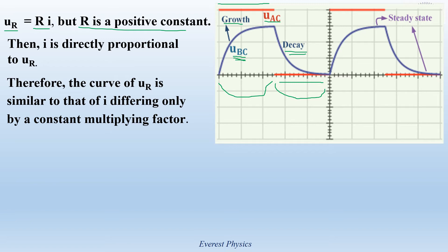At the end of the growth process, the current becomes maximum — we say that steady state is attained. At the end of the decay process, the current becomes zero — this is the steady state. In the steady state, the current becomes constant and does not vary anymore. Let's use the curves to explain the phenomenon.